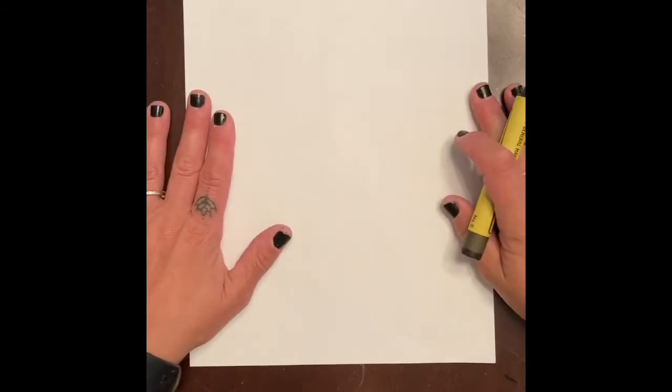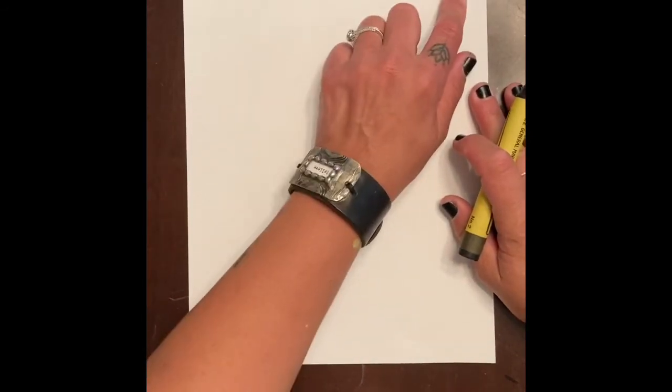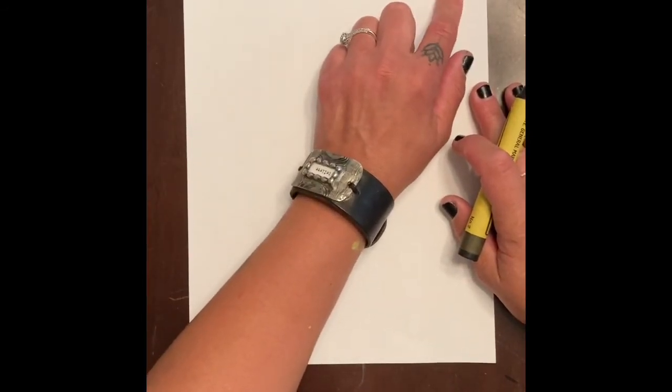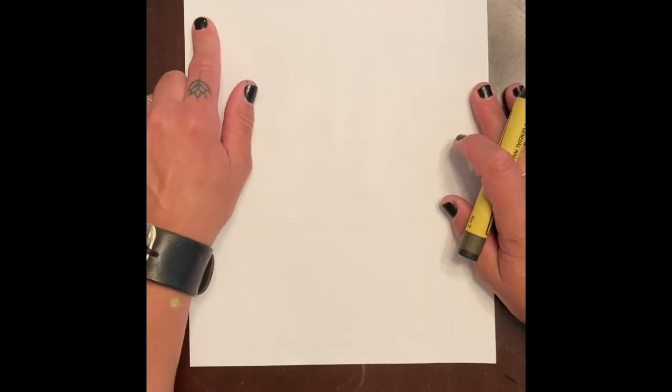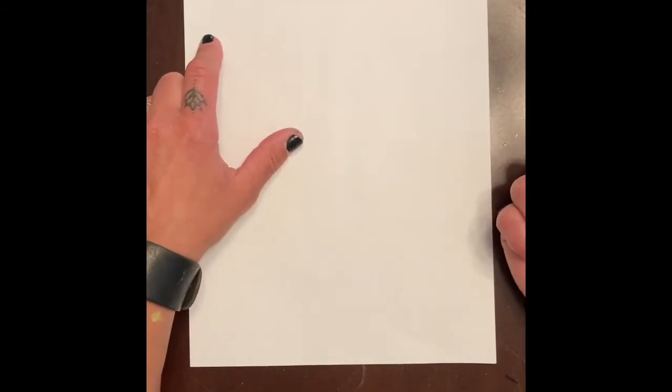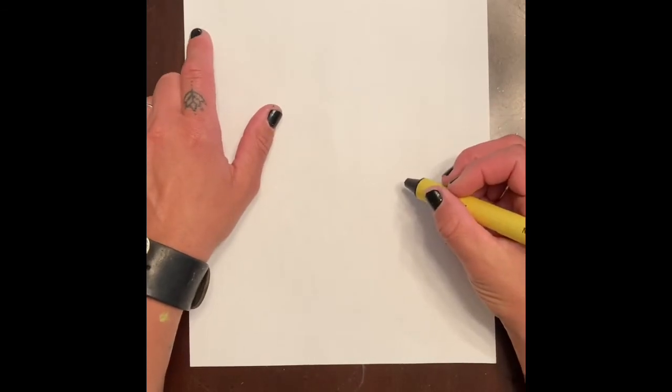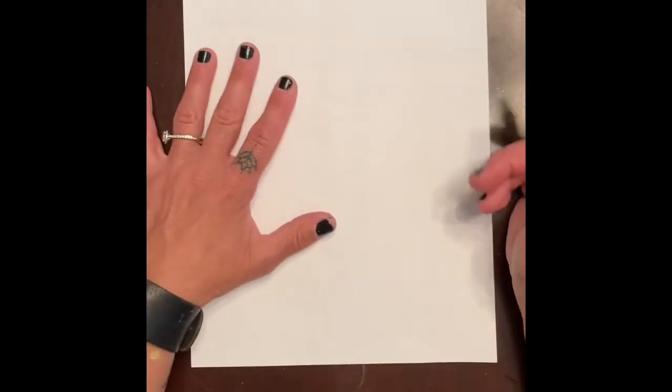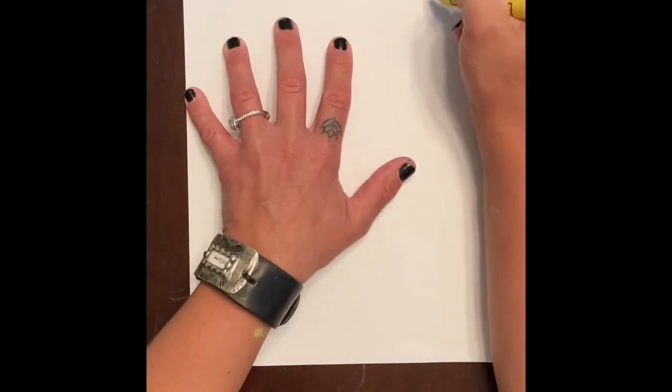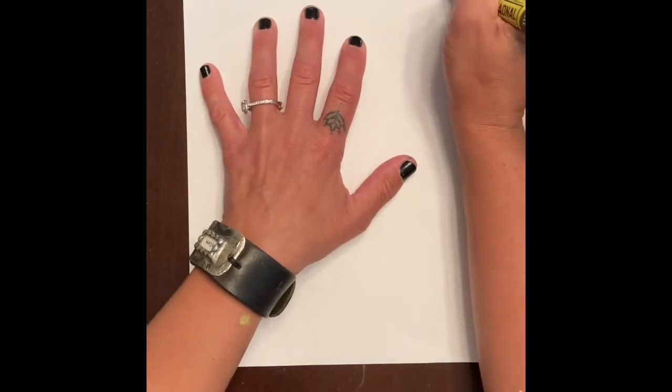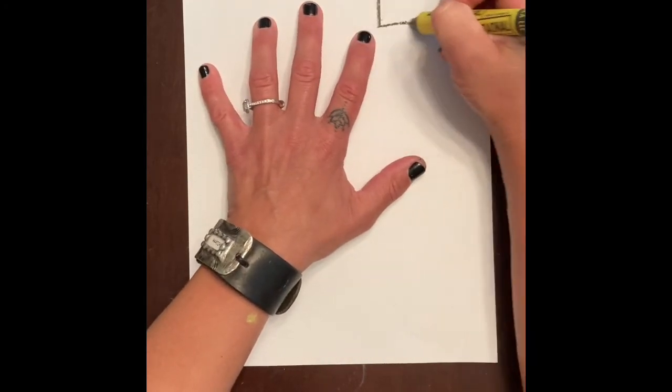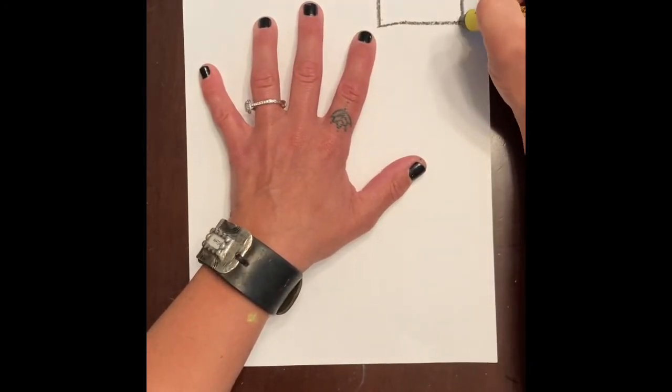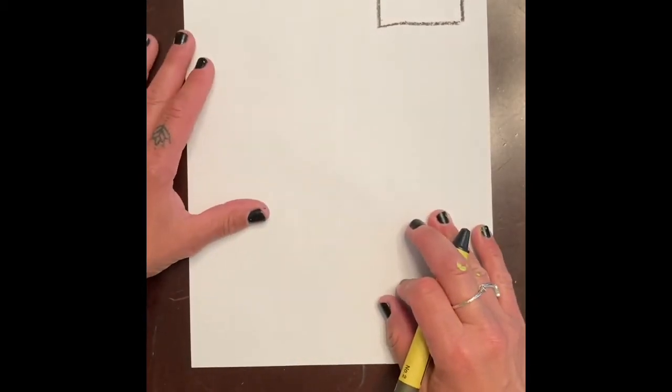When you're thinking of a shape, you can choose to draw in either the right or left corner. I'm going to use a black crayon because it's easier for you to see. In my original, I did a triangle, but maybe I want to do a rectangle. So I'm going to do a pretty big rectangle.